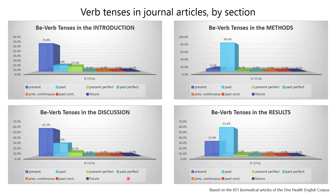Moving on to the discussion — it's remarkable that the future tense is used more in the discussion than any other section, implying the need for future research. Overall, these data show that the way to write the introduction is relatively similar to the way to write the discussion, and the methods section has similar verb tenses to the results. This is something to keep in mind as you write your manuscript.